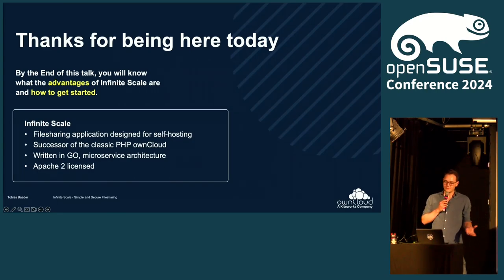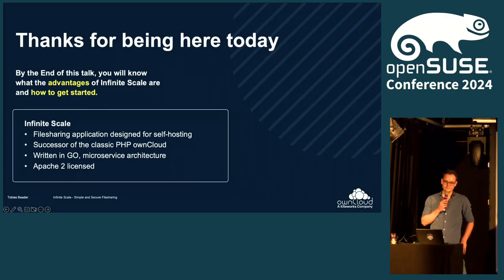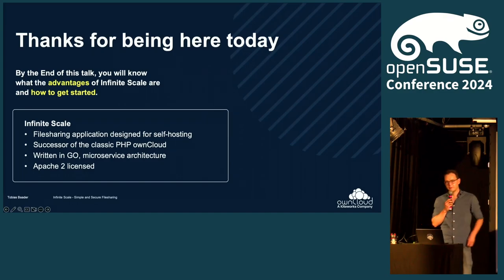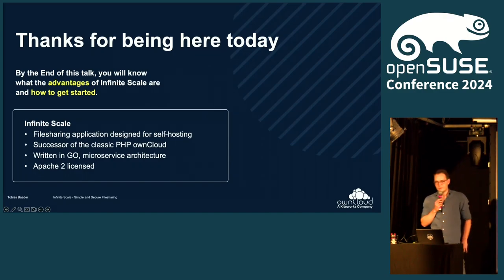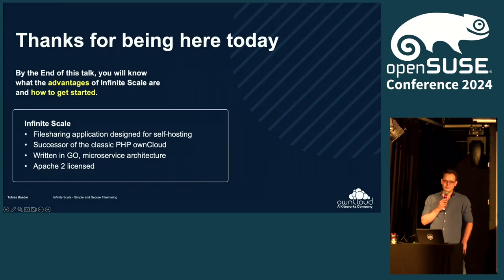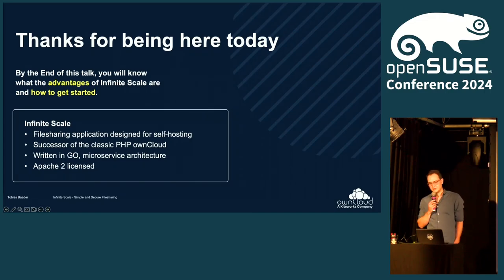For those who don't know, Infinite Scale is a file sharing application which is designed for self-hosting. It is the successor of the old PHP-based OnCloud, which also shares some history with NextCloud, and it is a complete rewrite in Go with a new microservice architecture. It is also Apache 2 licensed, so feel free to use it.